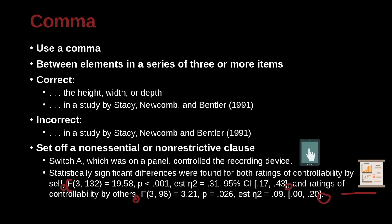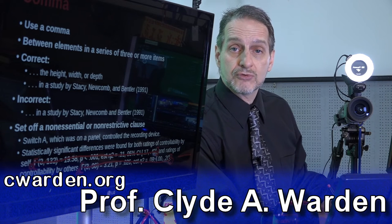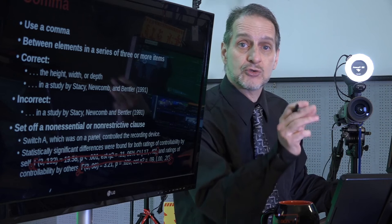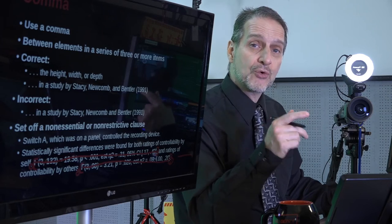We're providing the statistical information — the F-score, the degrees of freedom, the p-value. Is this very important? Yes, it's important information, but do you need it for the sentence? Let's do our test: if I cut out both statistical pieces and read just 'Statistically significant differences were found for both ratings of controllability by self and ratings of controllability by others' — that sentence is perfectly good. So those are non-restrictive clauses; the sentence is still complete without them. Comma before, comma after.